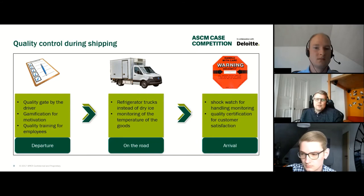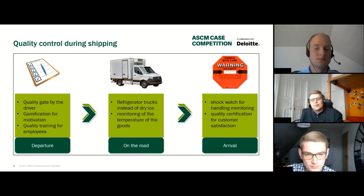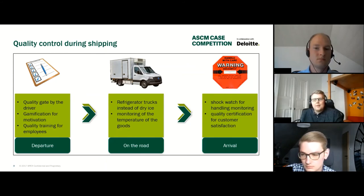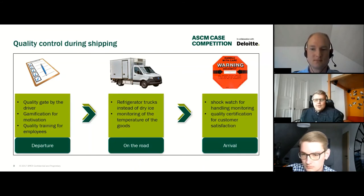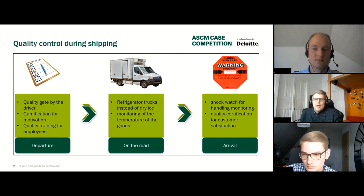At the beginning, the driver checks the goods before departure — drivers will be trained for this. Gamification is used to increase driver motivation; drivers can win prizes if there are particularly few quality problems. Instead of dry ice, existing vehicles are to be converted into refrigerated transporters. With the vehicle monitor system, the temperature of the goods is constantly monitored. Shock watches are attached to the goods to monitor handling, and a quality certification of the processes should also take place to increase customer trust in Juice Perfect.